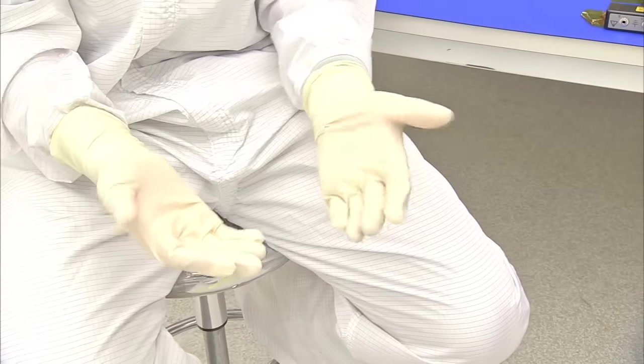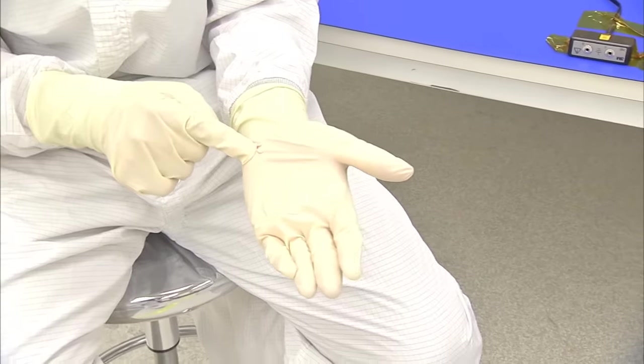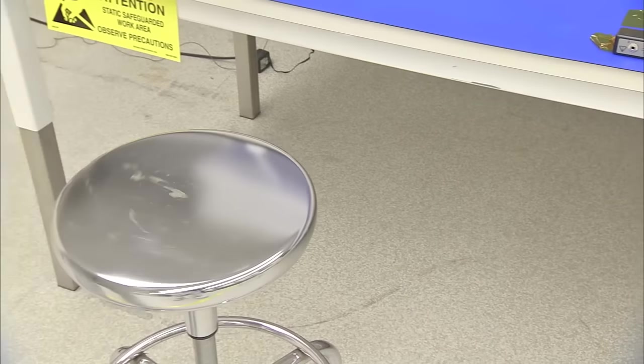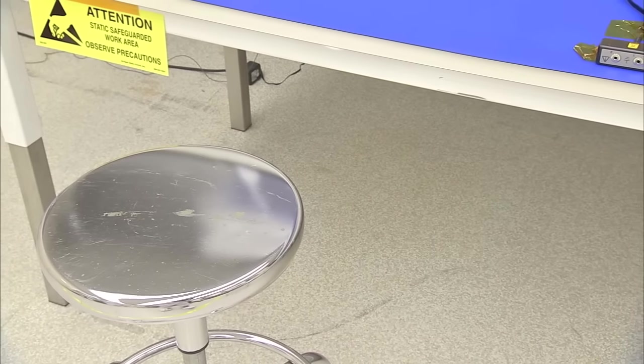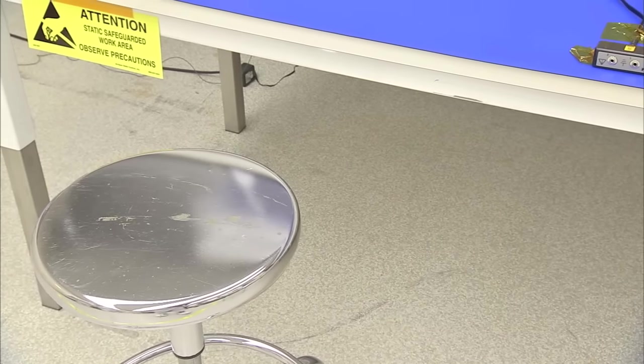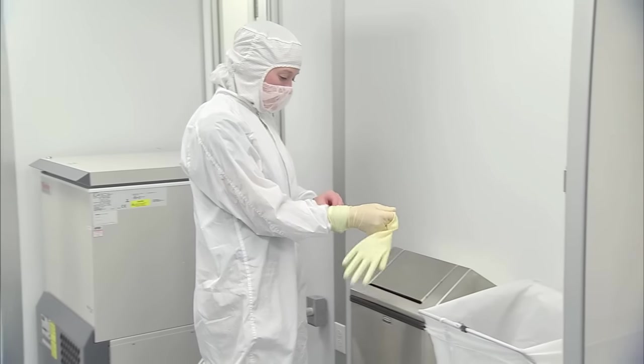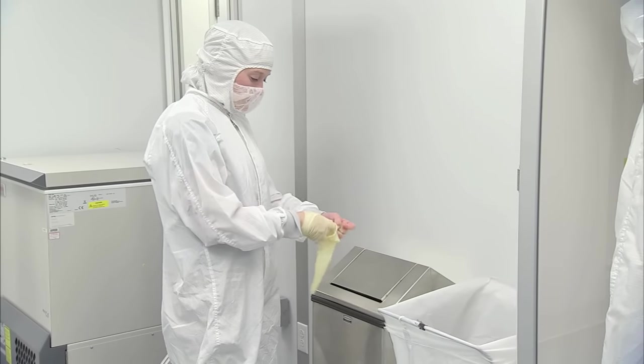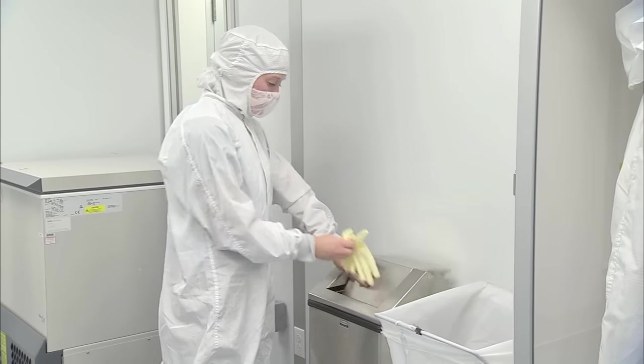Be sure to check your gloves regularly for any rips, tears or contamination. If your gloves are damaged or contaminated, exit the clean room and change out of your gloves in the gowning room. Your skin can introduce large quantities of contamination, so properly covering your hands is essential for protecting the hardware.